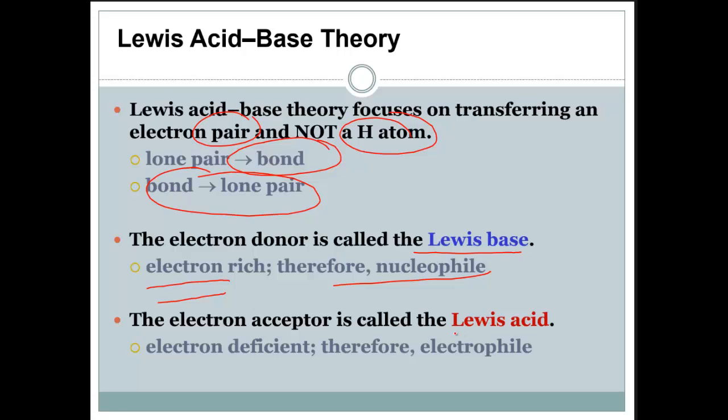Electron acceptor is called a Lewis acid, and it's electron-deficient, it's more positive. It doesn't mean it is positive, it's just more partially positive, and therefore electrophile, it loves electrons.